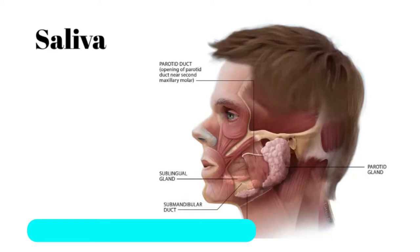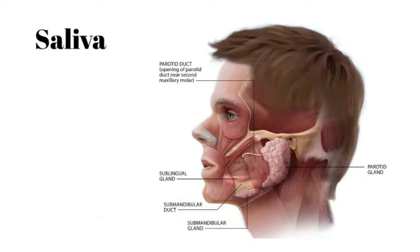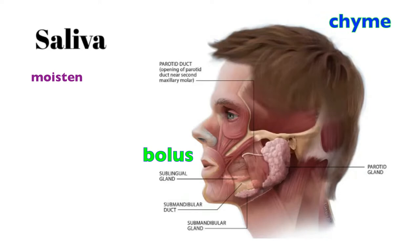Saliva contains water, ions, mucus, and enzymes. One purpose is moistening the mouth so it doesn't dry out, but it also moistens food being broken down and helps form what's known as a bolus — a compact structure of processed food. Once the bolus reaches the stomach we refer to it as chyme, but prior to the stomach we call it a bolus. Saliva also contains bicarbonate, which is a buffer that helps regulate pH.